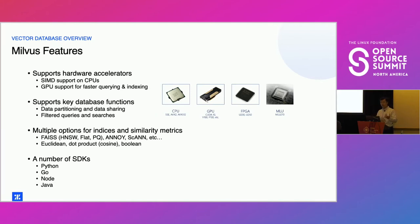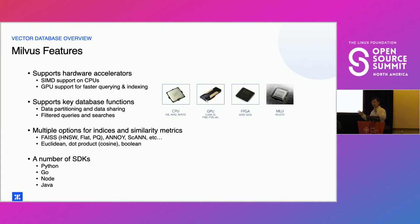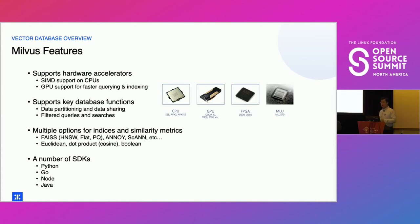We have multiple options for vector indexes and similarity metrics. We support FAISS — Facebook AI Similarity Search — including flat and HNSW implementations as well as product quantization. We also have ANNOY and are working on implementing Google's ScaNN. For similarity metrics we have standard Euclidean distance (L2 norm), dot product similarity — which equals cosine similarity for normalized vectors — and boolean metrics. Cosine and Euclidean are probably the two most commonly used.